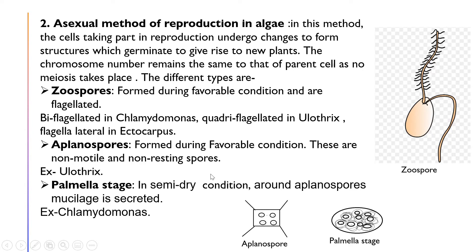Next we move on to the asexual method of reproduction in algae. In this method, the cells taking part in reproduction undergo changes to form structures which germinate to give rise to new plants. The chromosome number remains the same as that of the parent cell, as no meiosis takes place.